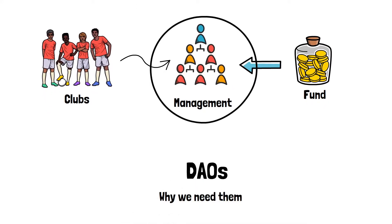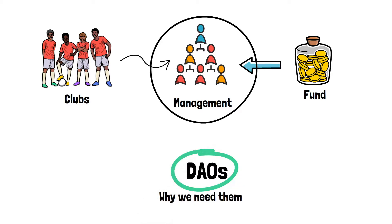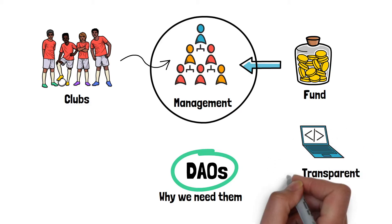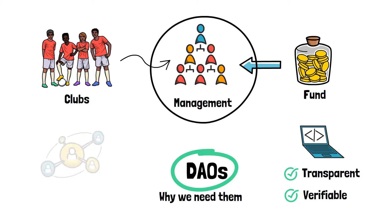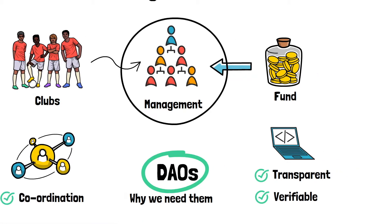Why do we need a DAO? Well, in this example, if you use a DAO to run the club, you don't need to trust anyone else in the group — just the DAO's code, which is 100% transparent and verifiable by anyone. A DAO will facilitate coordination among members to achieve the goals of the group.